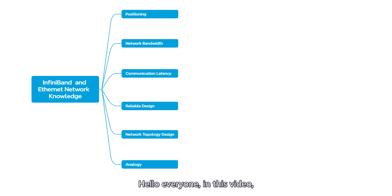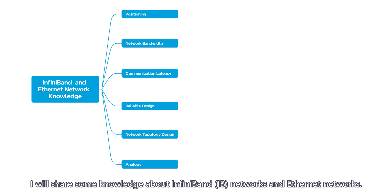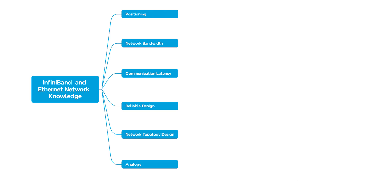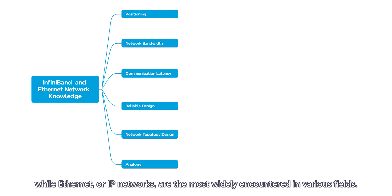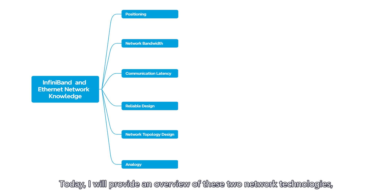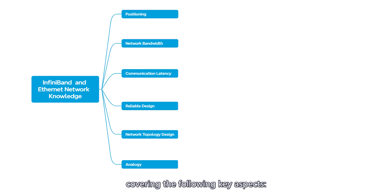Hello everyone. In this video, I will share some knowledge about InfiniBand (IB) networks and Ethernet networks. IB networks are primarily used in the high-performance computing domain, while Ethernet networks are the most widely encountered in various fields. Today, I will provide an overview of these two network technologies, covering the following key aspects.